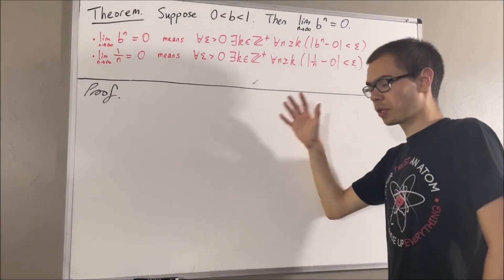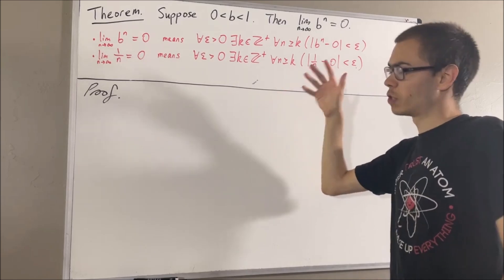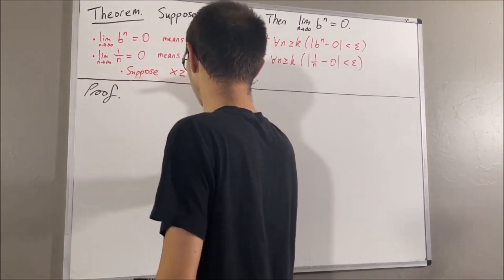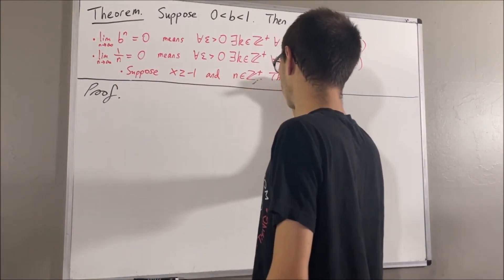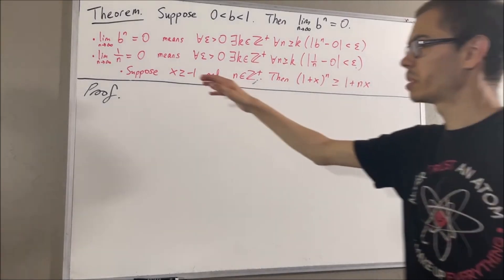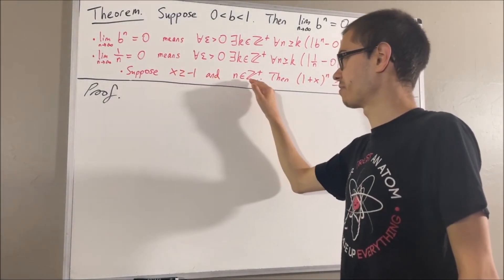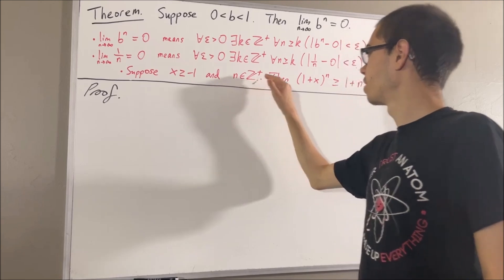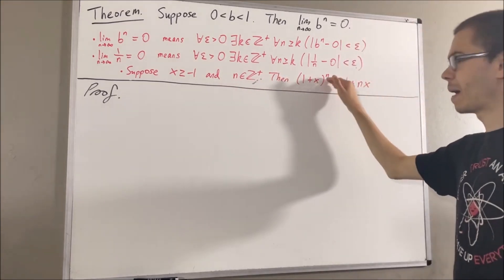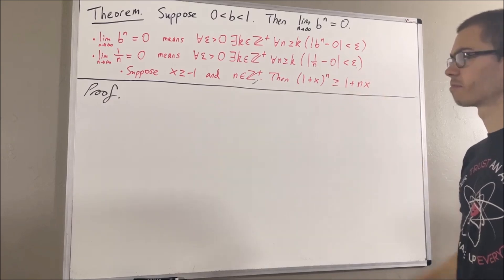We're also going to use Bernoulli's inequality, which, if we recall, goes like this. Suppose x is greater than or equal to negative 1 and n is a positive integer. Then, 1 plus x to the power of n is greater than or equal to 1 plus nx.